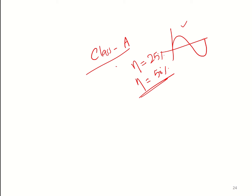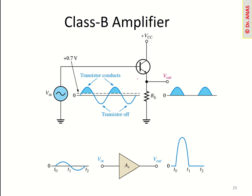Now we will look into the second category of power amplifiers, which is Class B. In the Class B amplifier, we actually have a complementary pair of electronic devices. Let's have a look at how it works, considering only one transistor in an emitter follower configuration. You supply the input here, and we have the base-emitter voltage. When the input voltage is greater than the base-emitter voltage — that is, 0.7 volts — this transistor will turn on.